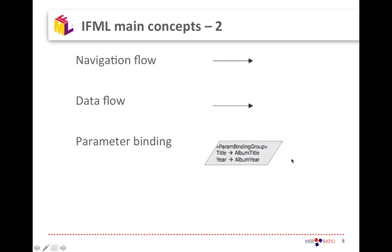These elements can be connected through flows. Flows give the language its name — Interaction Flow Modeling Language. Interaction flows can be of two types: navigation flows and data flows. Navigation flows describe the navigation of the user from one piece of user interface to another, typically triggered by a user event like a click or drag and drop, and they move the user from one part to another of the UI but can also change the state of the UI.